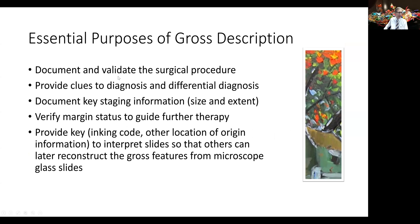When we think about the purposes of a gross description in a pathology report, there are a couple of purposes that should be remembered. First of all, we're documenting and validating the sort of surgical procedure that was performed. So if the surgeon codes for a massive soft tissue resection and we receive a small piece of fat, that's not going to jive. We're also going to provide, from our gross description, important clues to the diagnosis and potential differential diagnosis, sites of origin and nature of the tissue that may be involved. Most importantly, very often, we're providing very key staging information that's going to determine therapy.